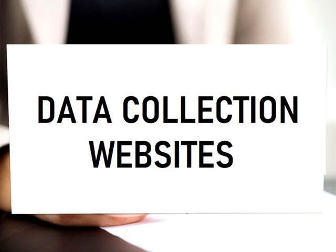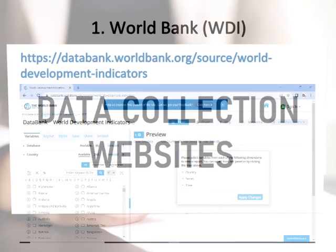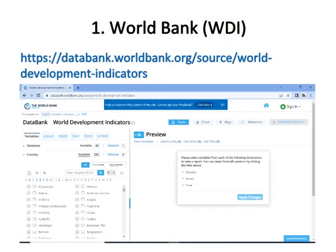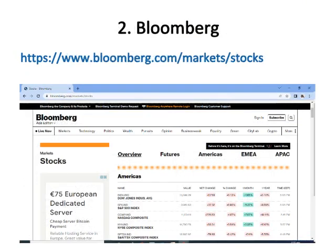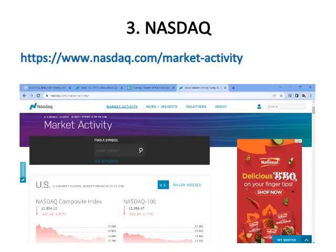Data collection website number one is World Bank, which is for World Development Indicators. You can download all macroeconomic variables data for all countries in MS Excel sheet. Number two is Bloomberg, which is for stock worldwide indexes regarding America, Europe, and Asia. Number three is NASDAQ, which is for company share prices of US-listed companies.